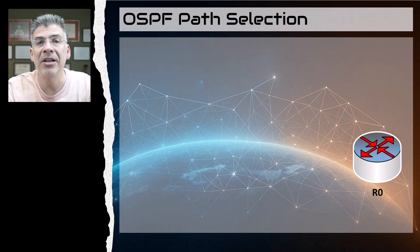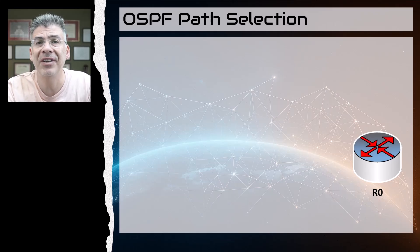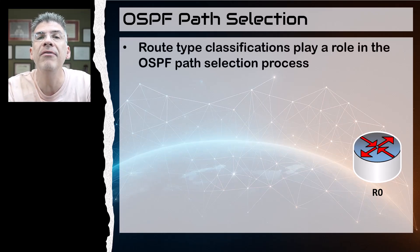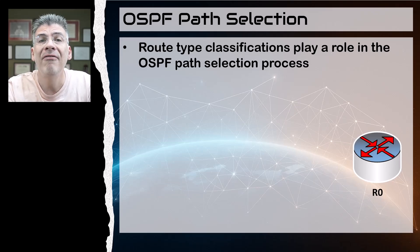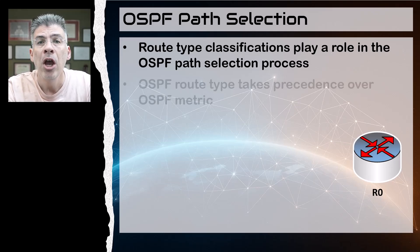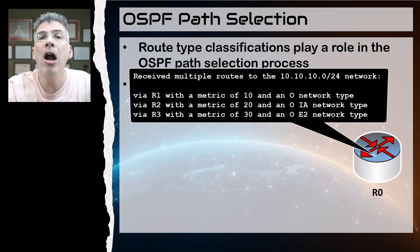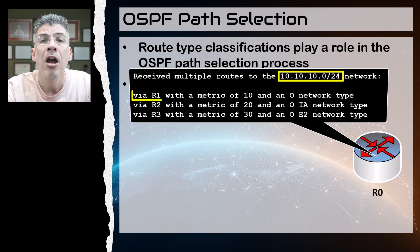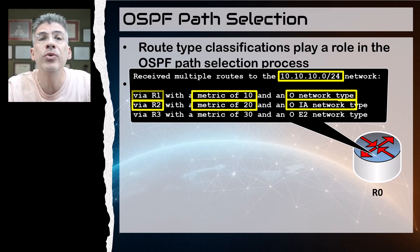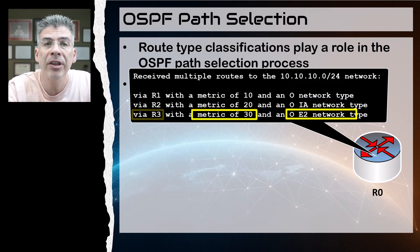Now, one last thing to mention: why are these route type classifications so important for OSPF? These play a role in the choice of OSPF path that a router will prefer. If a router learns about a particular route via multiple OSPF route types, it will prefer certain route types over others. OSPF route type takes precedence over the metric to the destination. For example, if R0 learns about the same 10.10.10.0/24 network from different routers using different route types, it will prefer them in a specific order.